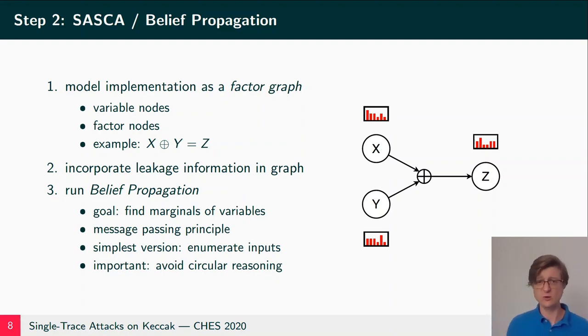Belief propagation is quite a versatile algorithm, has lots of uses, and its general goal is to find marginals of the variables inside this graphical model. It does so by using the message passing principle. For instance it takes the information of X and Y, combines them according to the rules of the XOR, and sends this information over to Z. This combination, the simplest form of combining X and Y, is by simply enumerating all possible inputs of X and Y, all possible combinations.